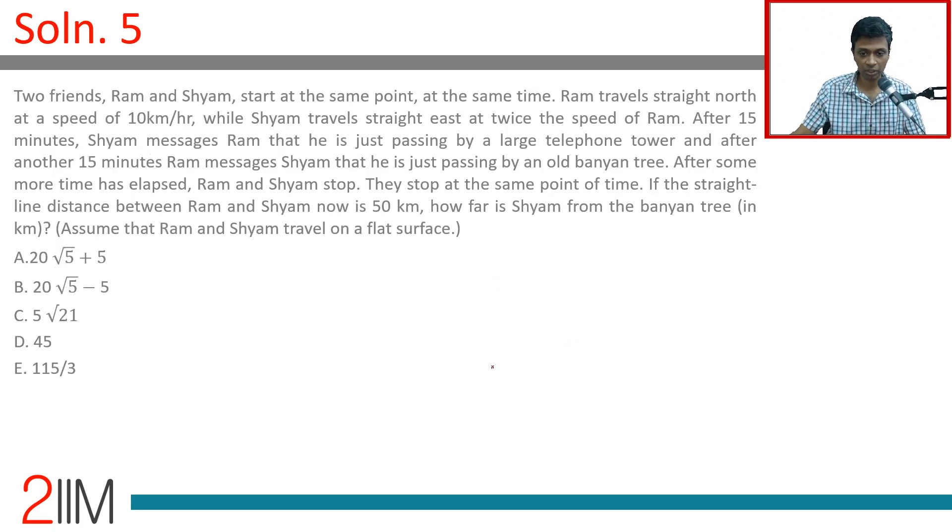I am going to draw this diagram. Ram travels at 10 kilometers per hour, so Shyam's speed is 20 kilometers per hour. Every time Ram travels X, Shyam travels 2X.